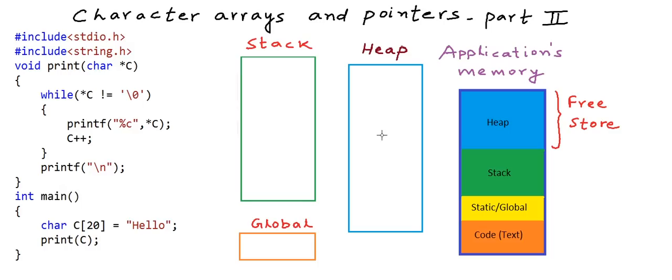When this program will start executing, first the main method main function will be invoked. Whenever a function is called, some amount of memory from the stack is allocated for the execution of that function. It's called the stack frame of that function. So let us say this stack frame from address 100 to 150 is allocated for the main function.